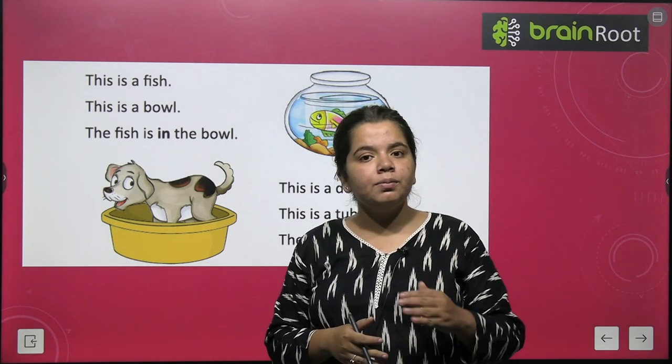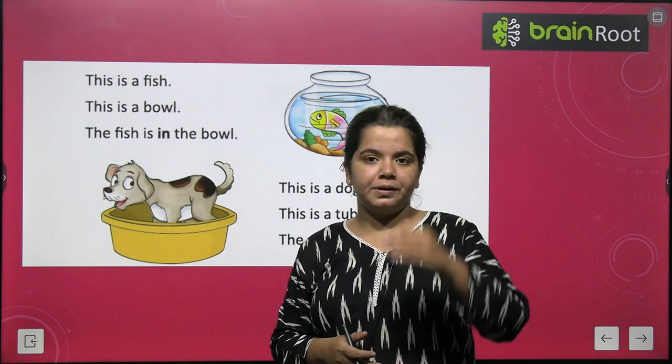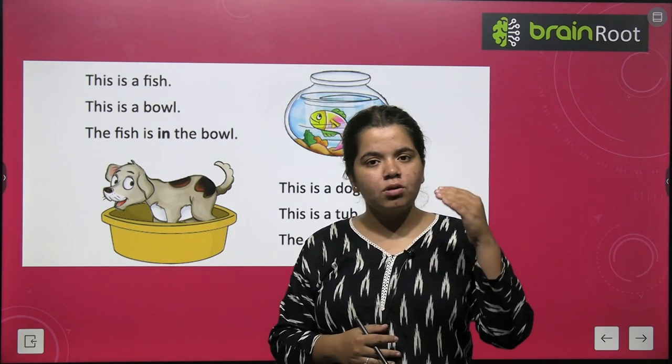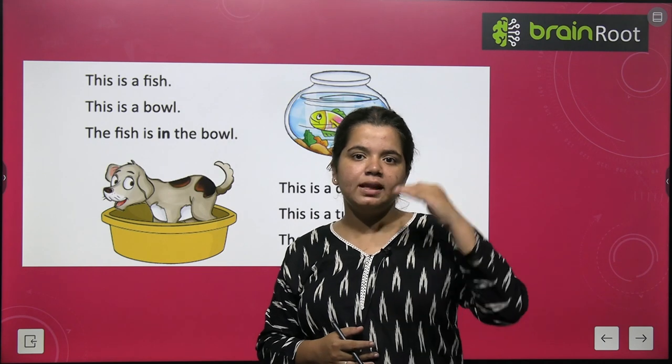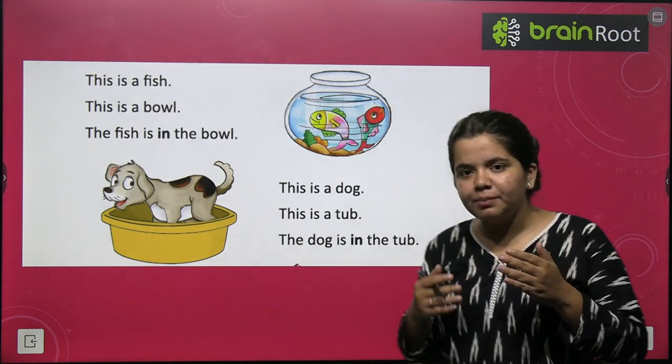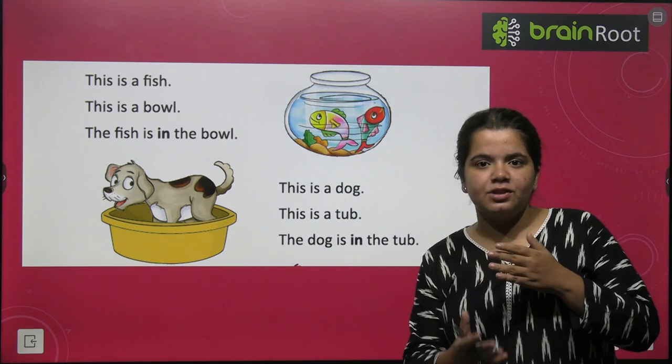On means upper — on top of something. Under means lower — below something.